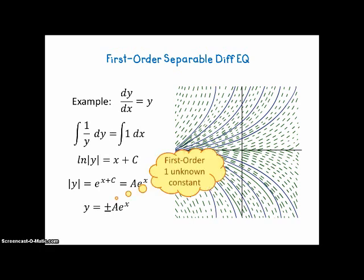Notice that our solution to this first-order differential equation has one unknown constant in it, because we have a family of possible solutions. If we have a particular point given to us — initial conditions — then we could solve for a. Now guess how many unknown constants we end up with in our solution to second-order differential equations. The answer is two, and we're going to find out that that is, in fact, correct.